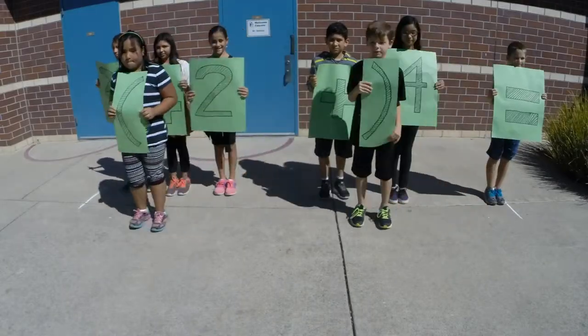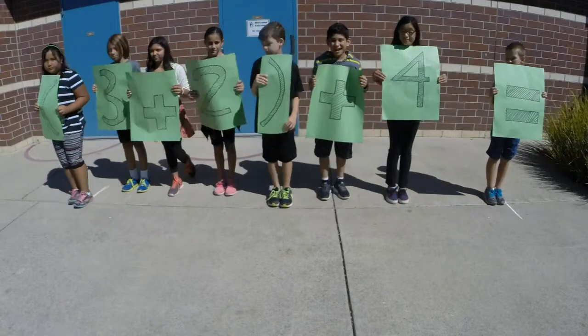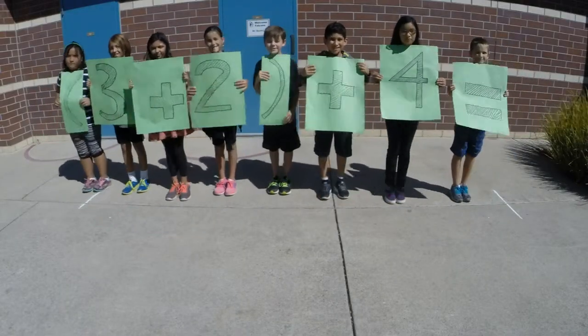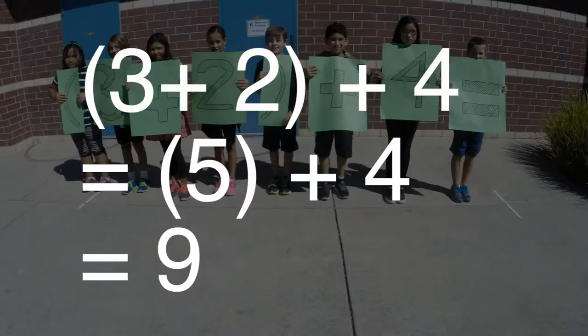The expression says quantity 3 plus 2 close quantity, plus 4. Now we add 3 plus 2 because they are inside the parentheses, and we get a total of 5. We add 5 to 4 and get a total of 9.